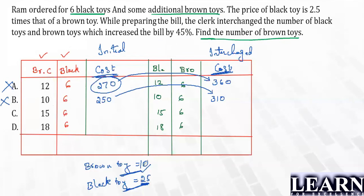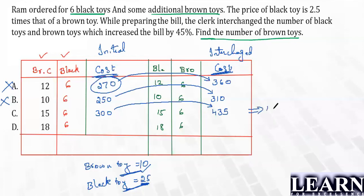For 15 brown toys: initial cost = 15 × 10 + 6 × 25 = 150 + 150 = 300. After interchanging: 15 × 25 + 6 × 10 = 375 + 60 = 435. Increase = 435 − 300 = 135. Is 135 equal to 45% of 300? 135/300 = 135/3 per 100 = 45%. Yes! So 15 brown toys gives exactly a 45% increase — the answer is option C.